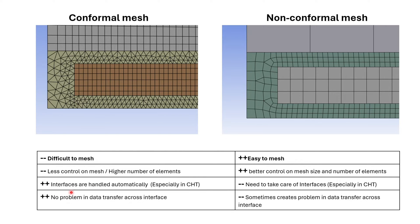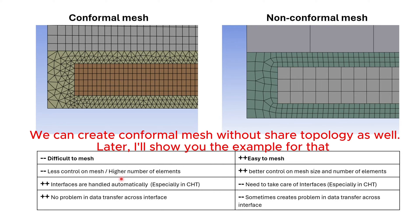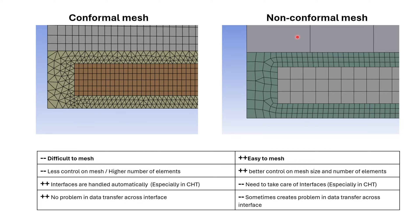One really important point: whenever you do conjugate heat transfer — meaning whenever you have solid and liquid and there is heat transfer across the interface — when you use conformal mesh, or shared topology, interfaces are handled automatically. On the other hand, in non-conformal mesh you have to take care of each interface and address them separately.